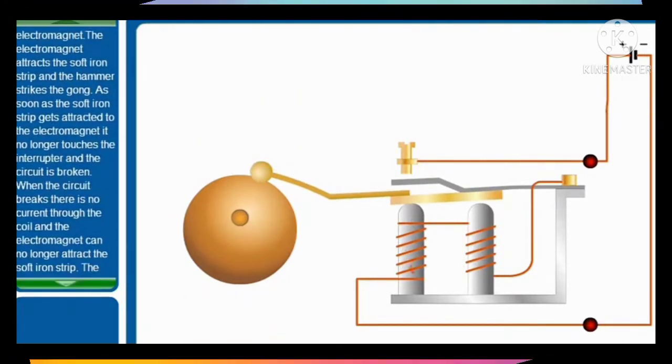As soon as the soft iron strip gets attracted to the electromagnet, it no longer touches the interrupter and the circuit is broken. When the circuit breaks, there is no current through the coil and the electromagnet can no longer attract the soft iron strip.